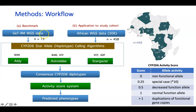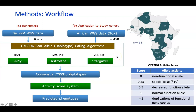Our workflow was in two phases. The first part was a benchmarking study where we used 75 publicly available whole genome sequence datasets from the CDC's Genetic Testing Reference Materials Program. We benchmarked three algorithms: ALDY, Astrolabe, and StarGazer. We also tested whether using a consensus genotyping approach involving all three tools is better than using either tool alone.